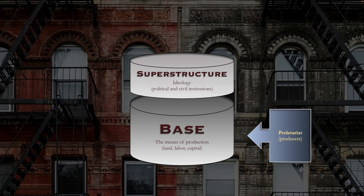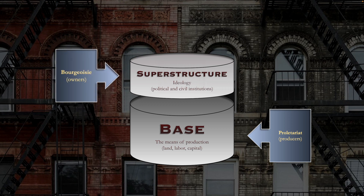Less controversial is the identification of the lower class, the proletariat. These are the producers — they work the land, they work in the factories, they manufacture things. They're associated with the base. And then there is what Marx called the bourgeoisie — the owners of the means of production. They have power and authority over the superstructure, controlling the ideology, the politics, the legal system, the financial systems, and the culture. And obviously, because we're talking about literary criticism, we'll talk more about the role literature plays in all this in a moment.